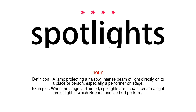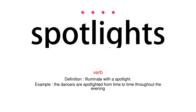Example: When the stage is dimmed, spotlights are used to create a tight arc of light in which Roberts and Corbett perform. Verb. Definition: Illuminate with a spotlight. Example: The dancers are spotlighted from time to time throughout the evening.